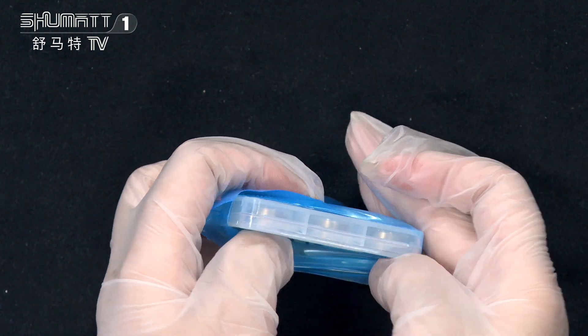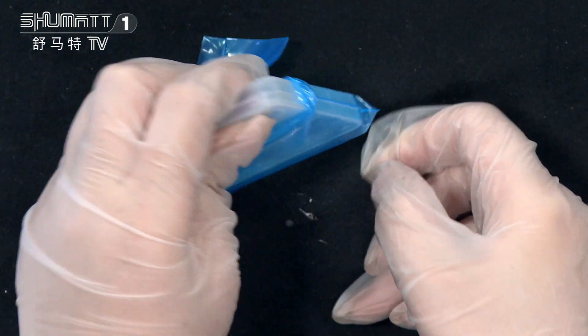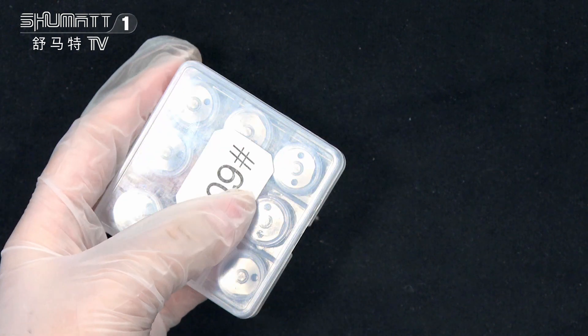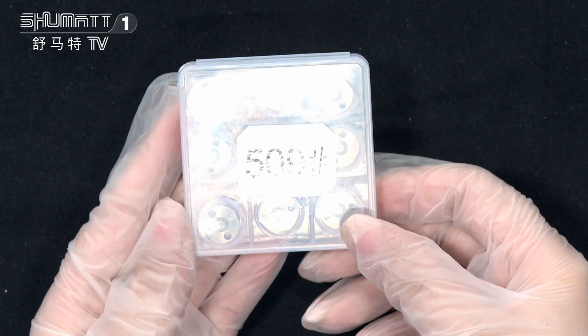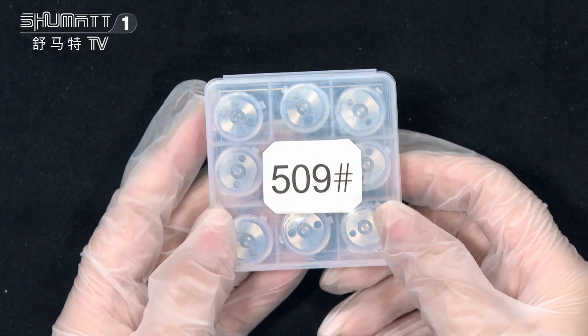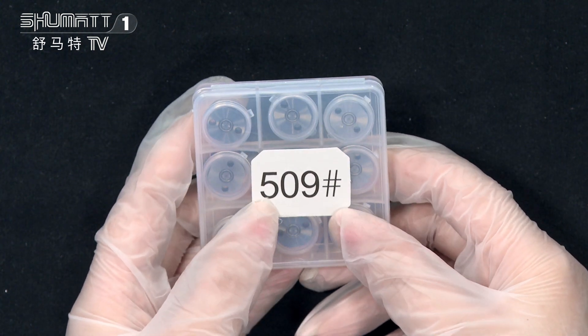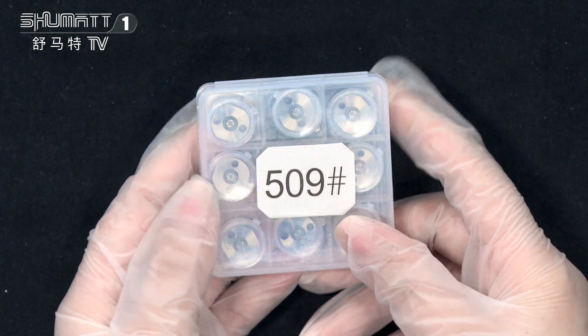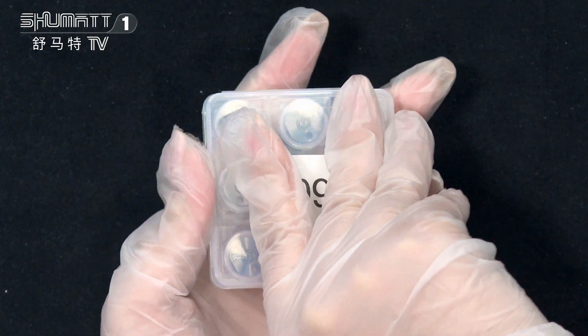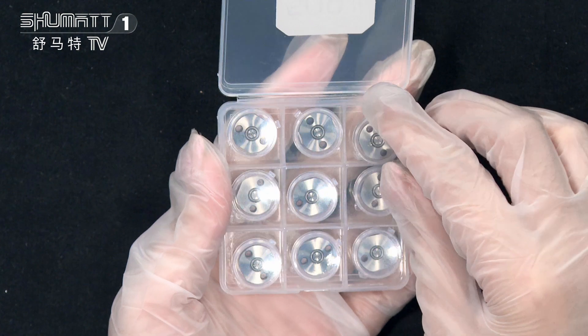We support customized service - we can customize the label, packing, etc. You can take a look, it has nine pieces in a nine-square packing format. On the surface, this is the product code number 509. Open it, and each of them has independent packing.